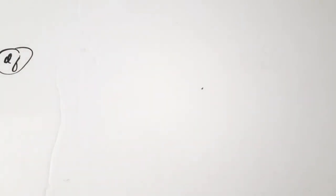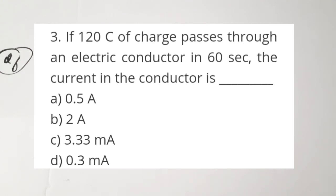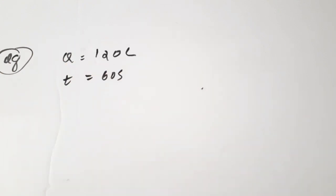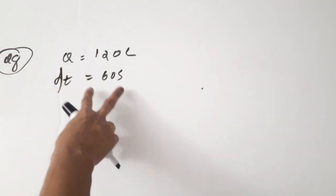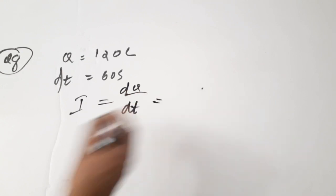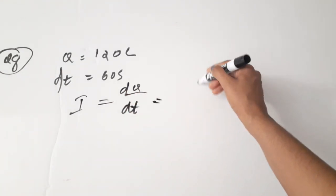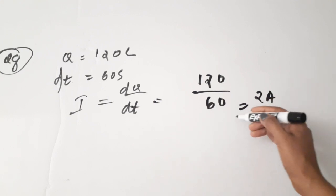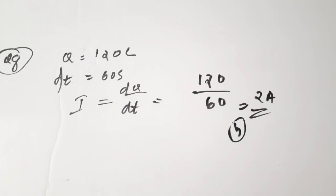Question number 8: if 120 Coulombs of charge passes through an electric conductor in 60 seconds, the current is dash. Q = 120 Coulombs, ΔT = 60 seconds. Current I = ΔQ/ΔT = 120/60 = 2 Amperes. The correct answer is B, 2 Amperes.